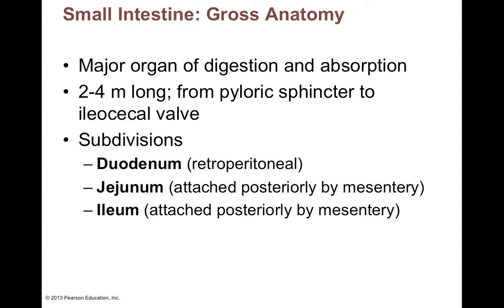We can divide the small intestine into three divisions: the duodenum, the jejunum, and the ileum. The duodenum is mostly retroperitoneal — behind the digestive organs. The jejunum is attached posteriorly by mesentery proper, which anchors it to the posterior abdominal wall. The ileum is the distal part of the small intestine and links up with the first part of the large intestine through the ileocecal valve.